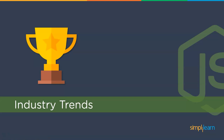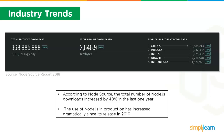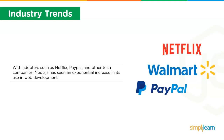Moving on to industry trends: Node.js developers are in demand across the globe as many companies adopt JavaScript libraries. According to Forbes, it is one of the top 10 most in-demand jobs. According to Node.js source, the total number of Node.js downloads increased by 40% in the last year. The use of Node.js in production has increased dramatically since its release in 2010, with early adopters such as LinkedIn, PayPal, and Netflix driving exponential growth in its use in web development.